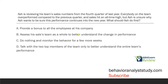Ash is reviewing his team's sales numbers from the fourth quarter of last year. Everybody on the team overperformed compared to the previous quarter, and sales hit an all-time high. But Ash is unsure why. Ash wants to be sure his performance continues into the new year. What should Ash do first?